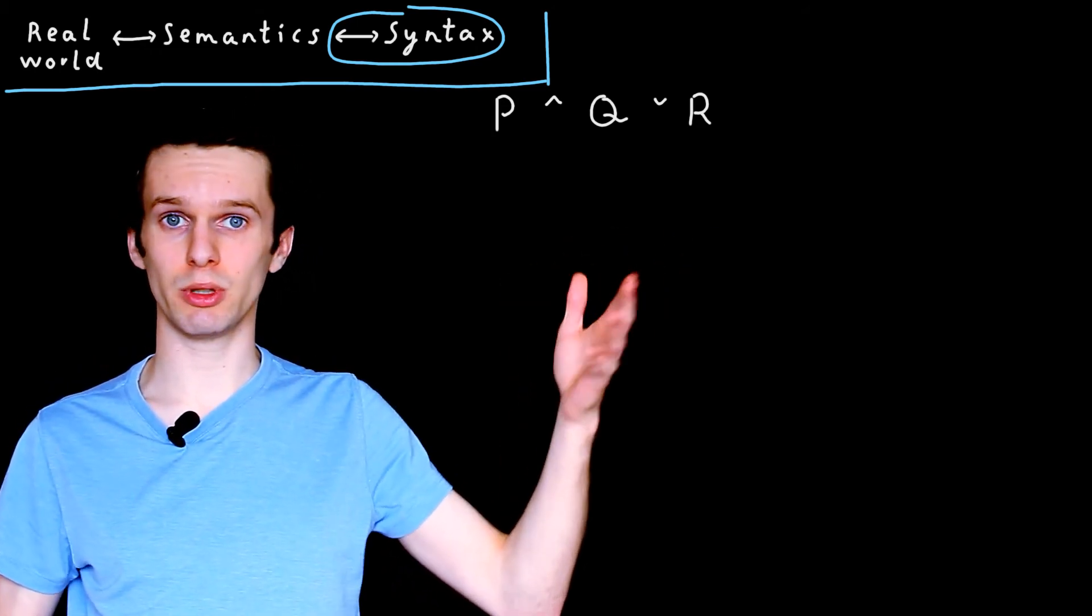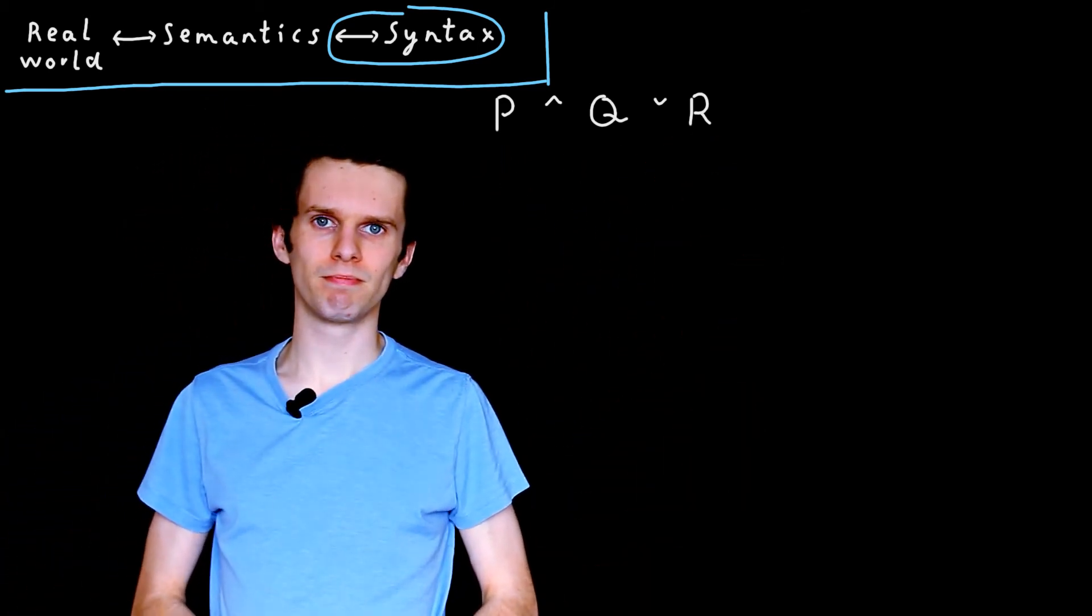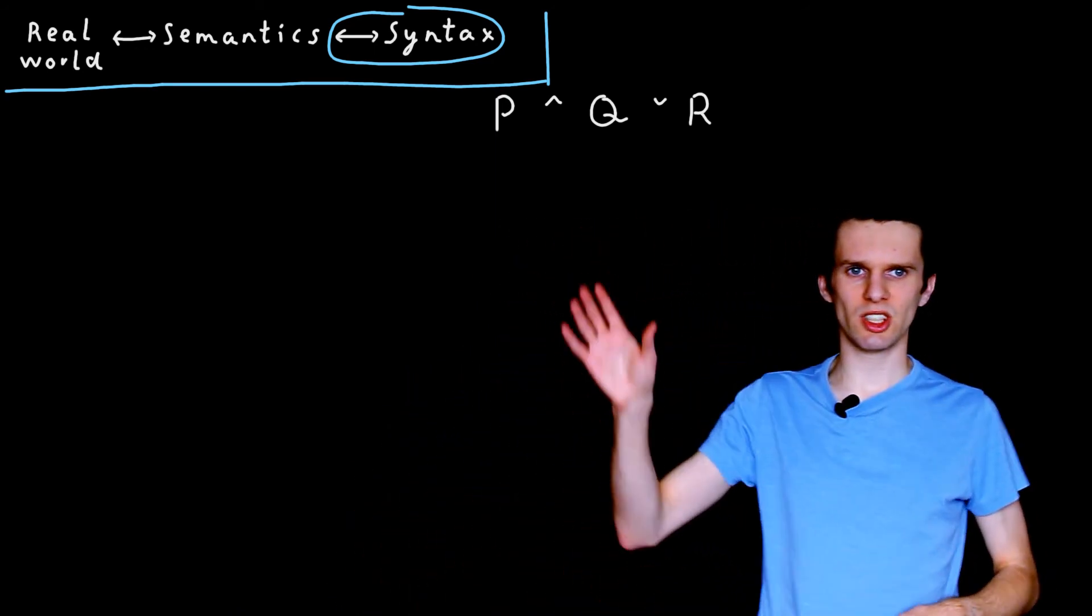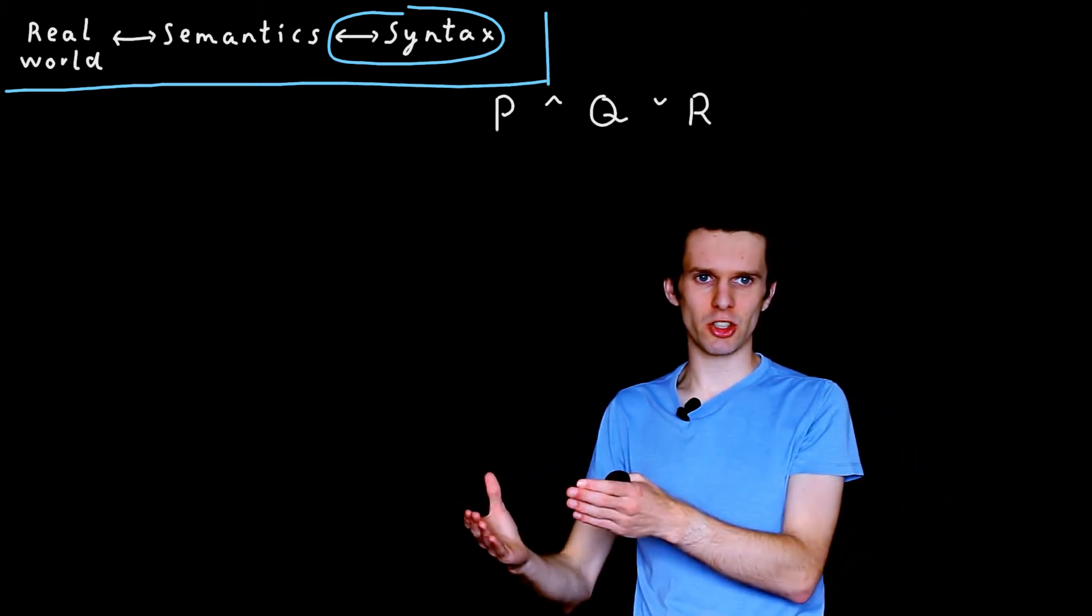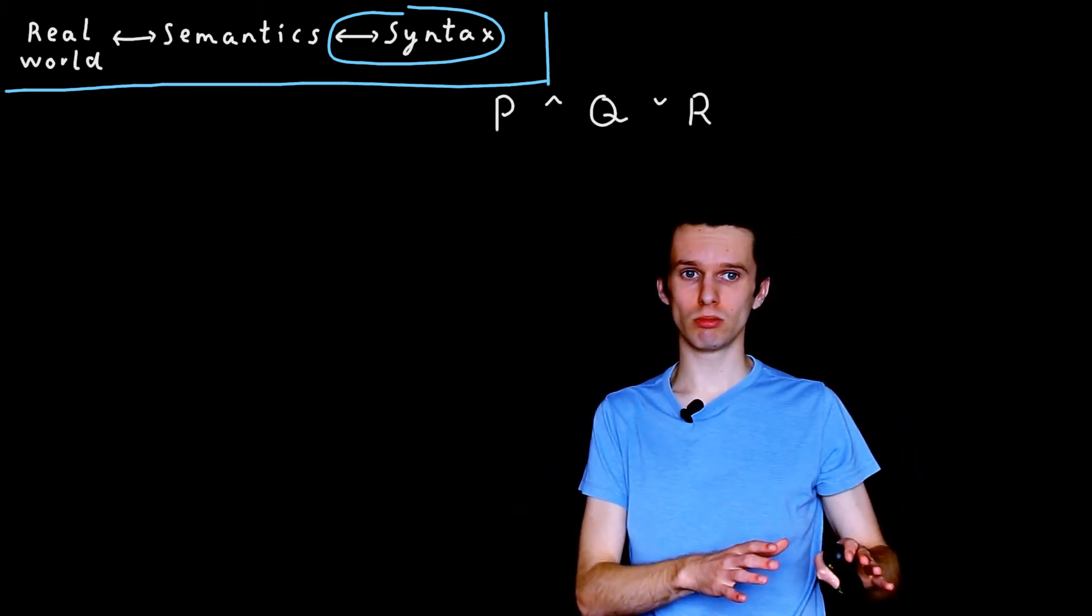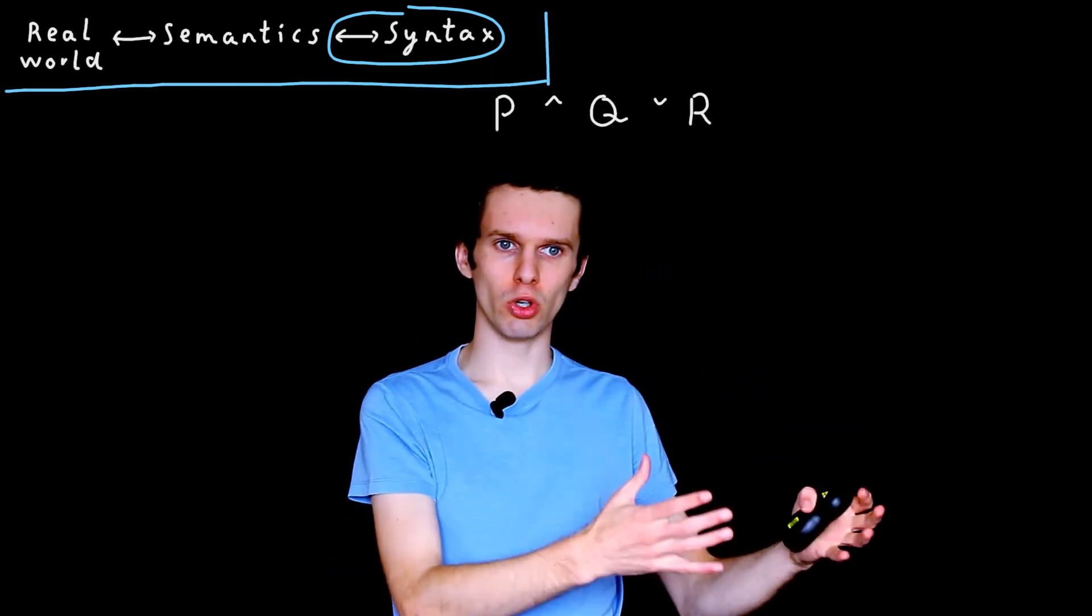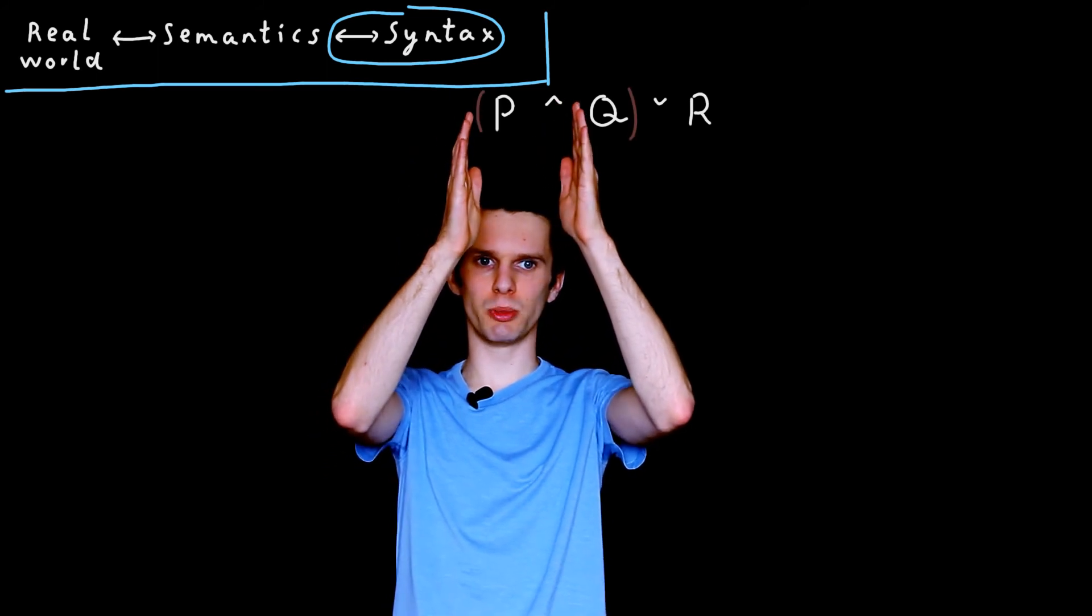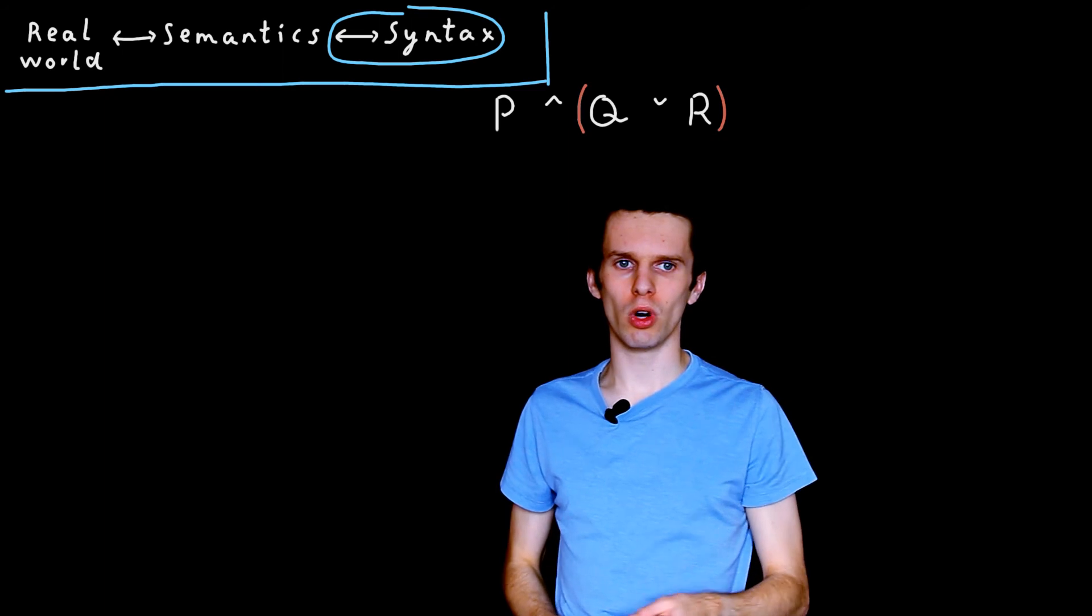So here's something that we might feasibly write down in our syntax. This reads, if we were to read it in English, P and Q or R. And immediately we hit a bit of a problem, because this is ambiguous. This could mean P and Q or R, or it could mean P and Q or R. The real question is where are we putting the brackets? Are we putting them around the P and Q, or are we putting them around the Q or R?